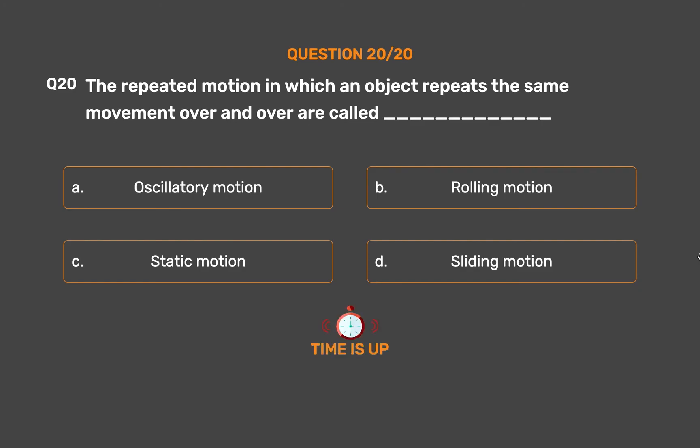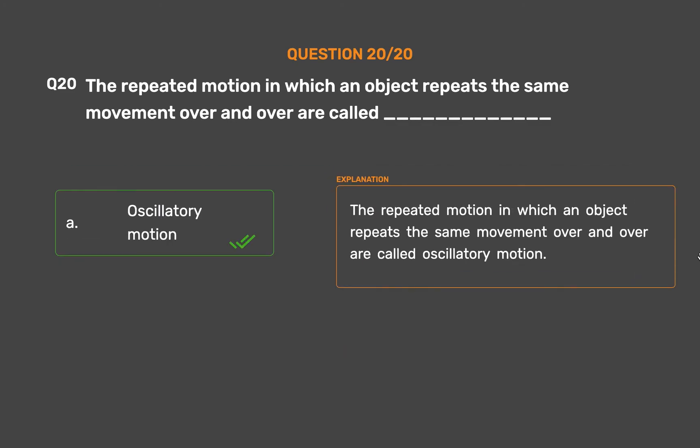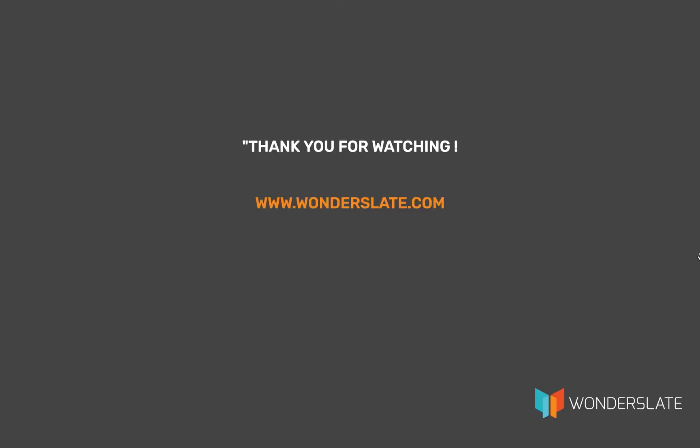The correct answer is Option A, Oscillatory motion. The repeated motion in which an object repeats the same movement over and over is called oscillatory motion.